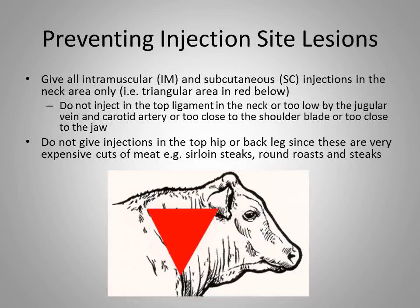So how do we prevent injection site scars? It's very important that when we administer animal health products — vaccines, antimicrobials, or parasiticides such as injectable ivermectins — we only give injections in the neck area of the cattle. The triangular area shown in the picture below indicates where injections can be given, either intramuscularly or subcutaneously. We must avoid injecting above that triangular area where there is a large ligament, as products will not be properly absorbed.